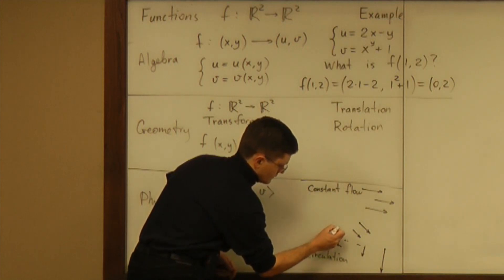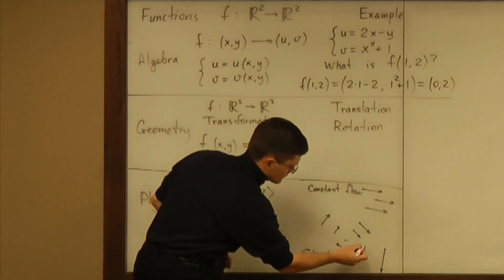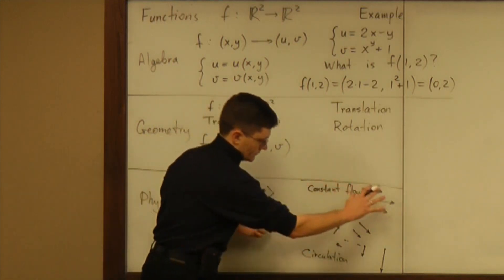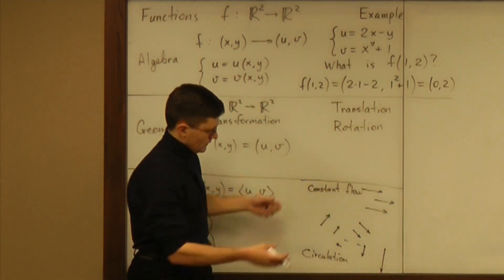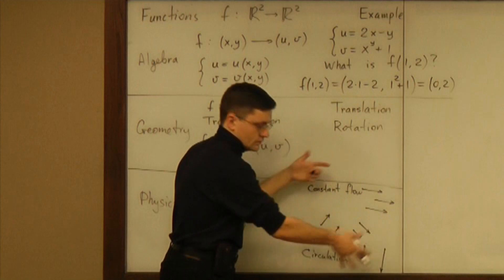So everything is just rotating around the center. This is how velocities look like as you consider rotation of the plane as a rigid object around the center.